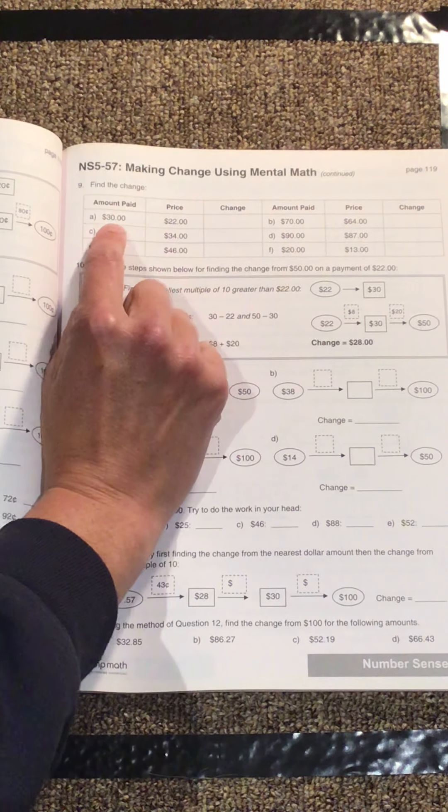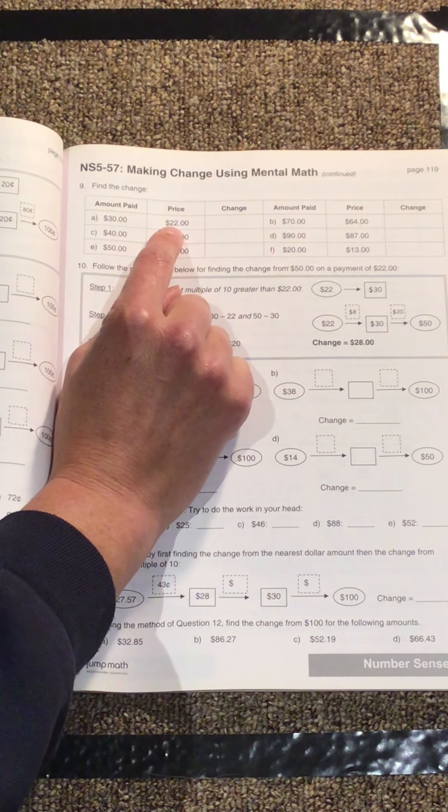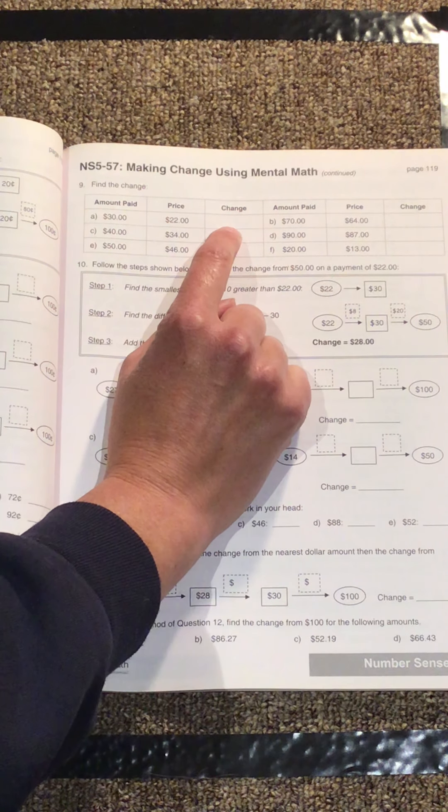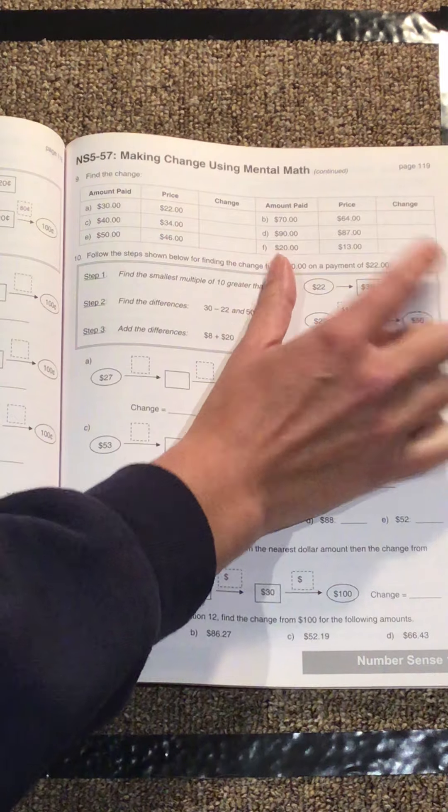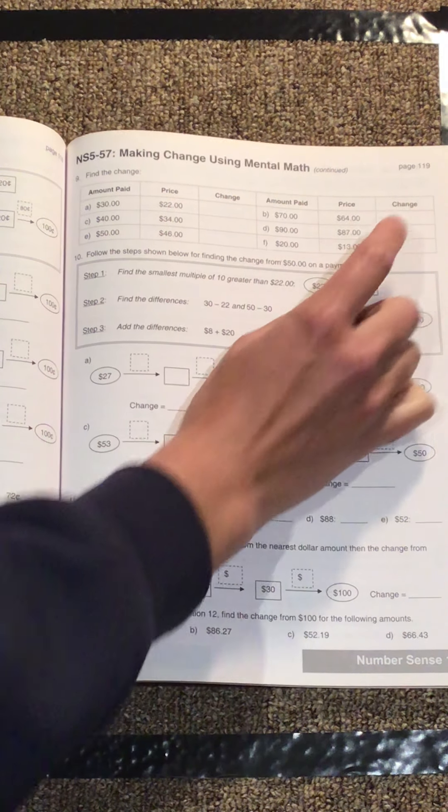Find the change. So they paid $30, the price was $22, what change would they get? Right, so it's this chunk and then this chunk. Amount paid, price, change.